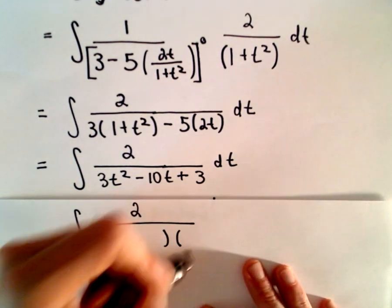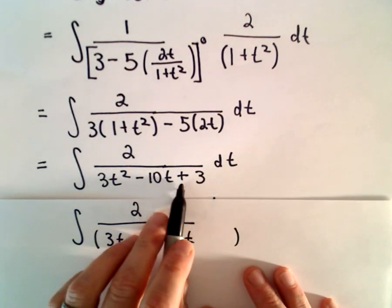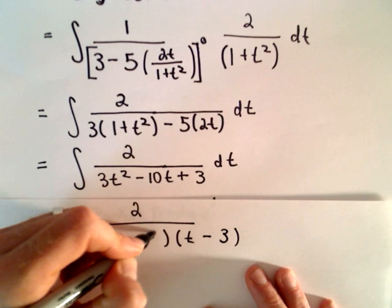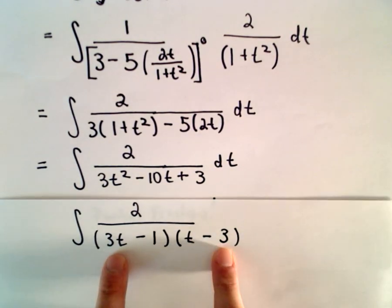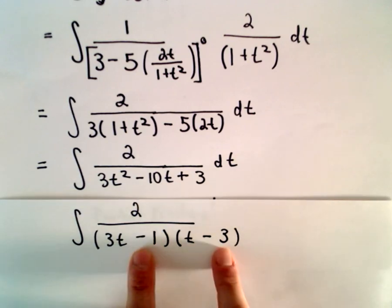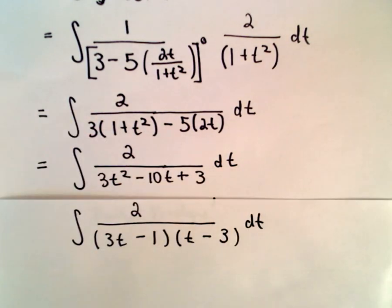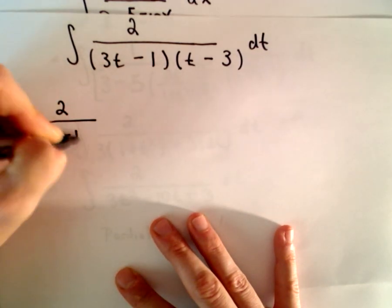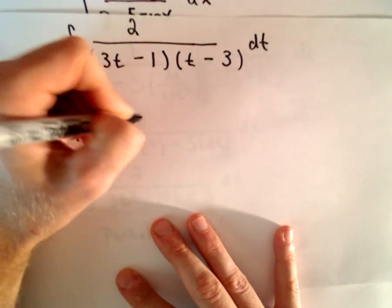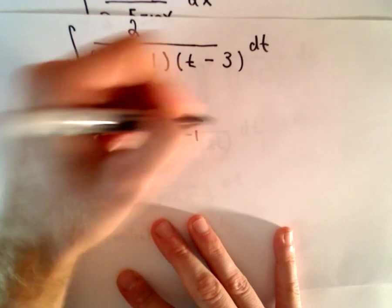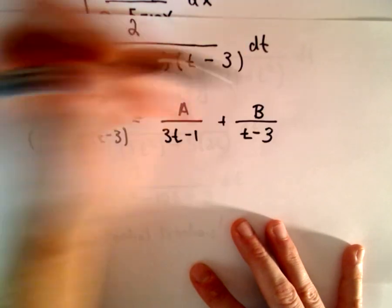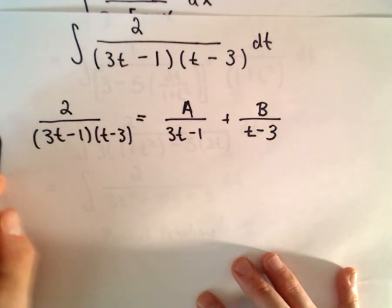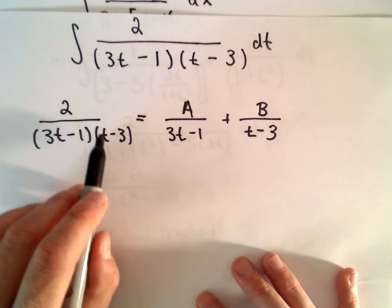Depending on whether it does or doesn't, we'll do different things — and I think this one does factor. To get 3t squared, we could use 3t and t. I need a positive product but negative sum, so both signs should be negative. Using 3 and 1, we get 3t squared minus 9t minus t, which gives negative 10t, and negative 1 times negative 3 gives positive 3. So we have 2 over (3t minus 1)(t minus 3), with linear factors 3t minus 1 and t minus 3. I'm going to put constants a and b on top and do partial fraction decomposition, multiplying both sides by (3t minus 1)(t minus 3).